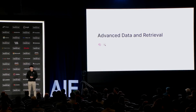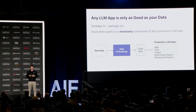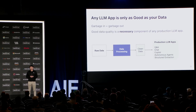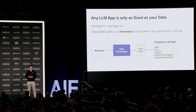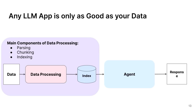Any LLM app these days is only as good as your data — garbage in, garbage out. Good data quality is a necessary component of any production-grade LLM application, and you need that data processing layer to translate raw, unstructured, semi-structured data into some form that's good for your LLM app. The main components of data processing are parsing, chunking, and indexing.